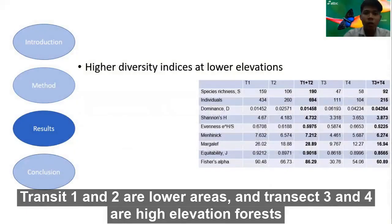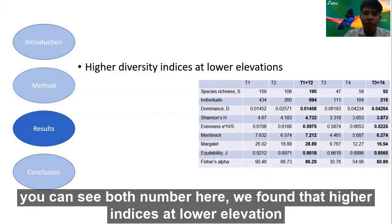Transects 1 and 2 are lower elevation areas, and transects 3 and 4 are high elevation forests. You can see the species numbers for each transect here.